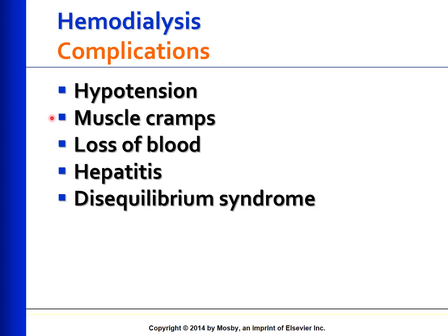Muscle cramps: factors associated with their development include hypotension, hypovolemia, high ultrafiltration rate, and use of low sodium dialysis solution. Treatment includes reducing the ultrafiltration rate and administering fluids. Blood loss may result from incomplete rinsing of blood from the dialyzer, accidental separation of blood tubing, dialysis membrane rupture, or bleeding after needle removal. Too much clotting or clotting disorders can also cause bleeding. Firm but non-occlusive pressure on the access site is used until the risk of bleeding has passed.